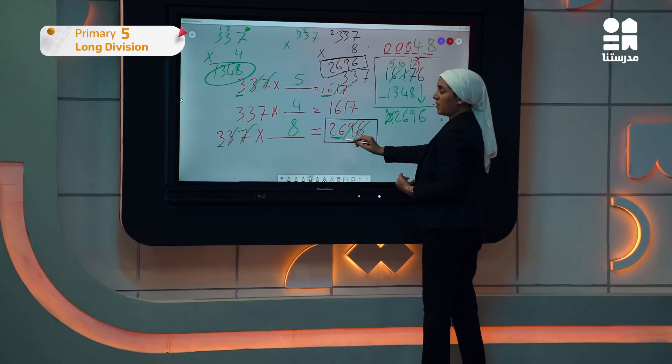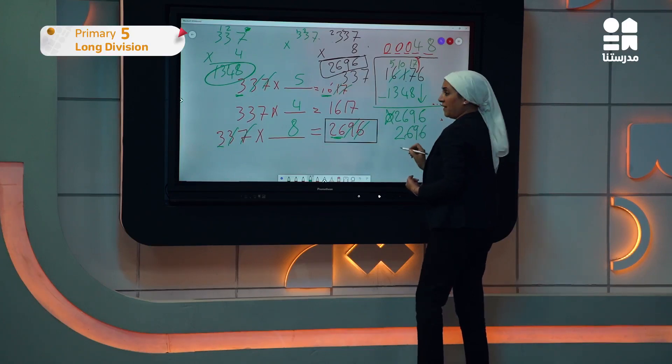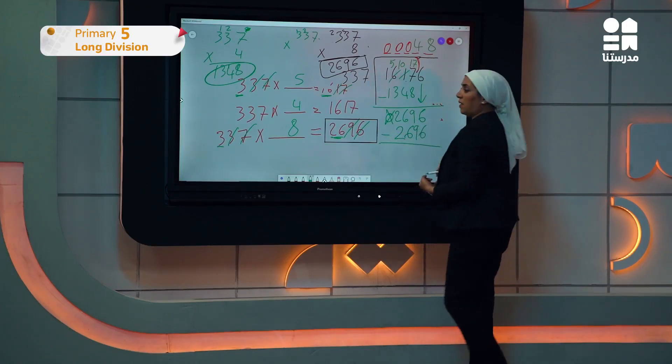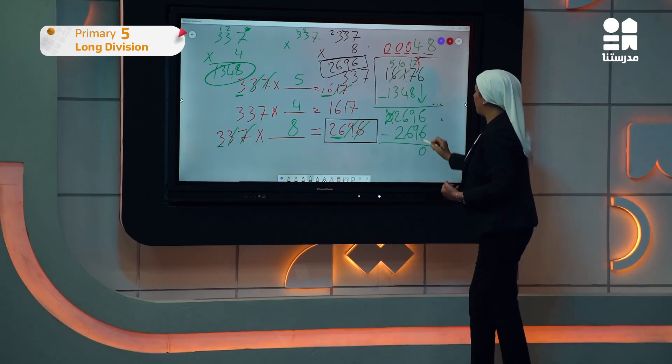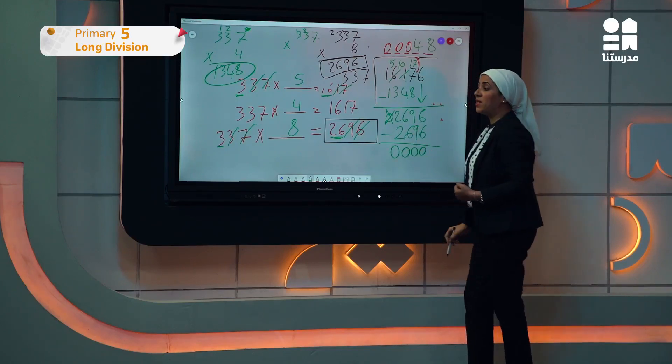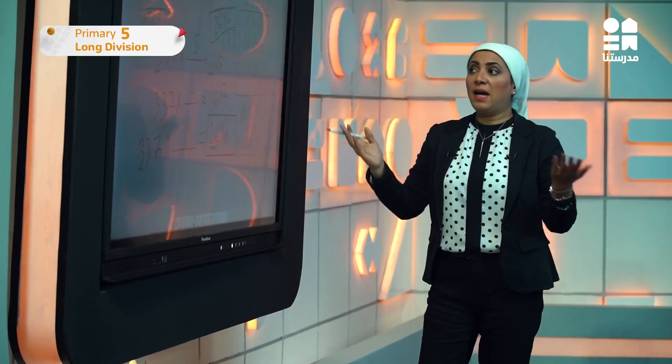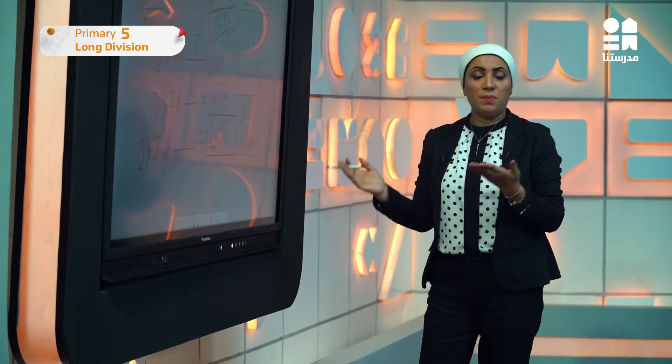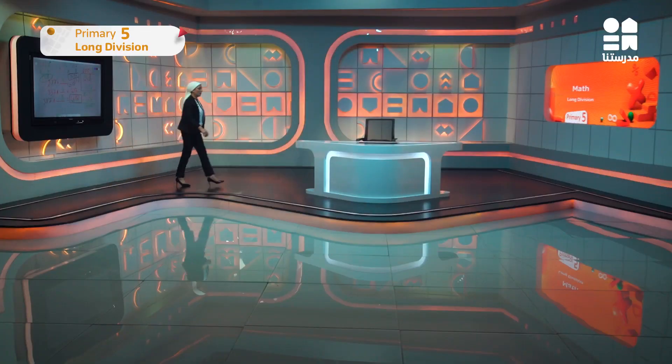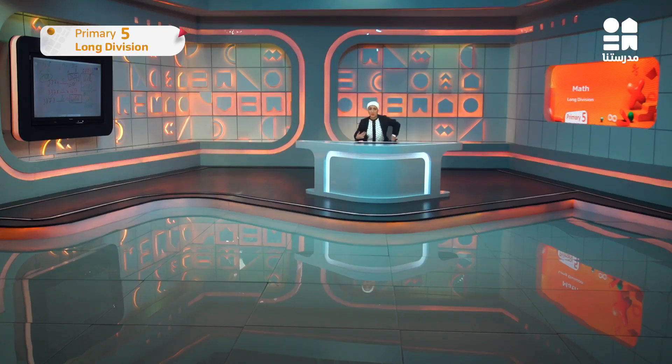The result is 2696. I'll put it under the digits that I have. Minus: 6 minus 6 is 0, 9 minus 9 is 0, 6 minus 6 is 0, 2 minus 2 is 0. My answer is 0. This is how we do long division with all the steps, and how we read the story problem and solve it. Here are more examples on story problems, then we will move to another concept with long division.